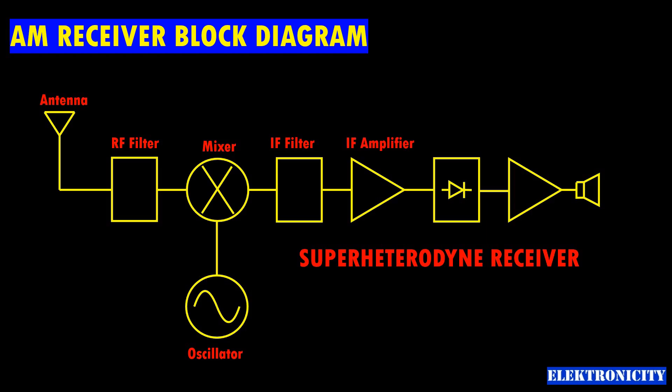IF amplifier: it amplifies the IF signal. Gains of 50 to 100 in each IF stage are common. The amplifier is controlled by an automatic gain control voltage from the demodulator.